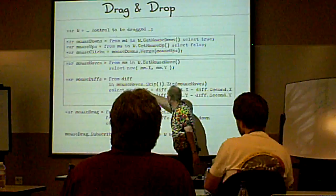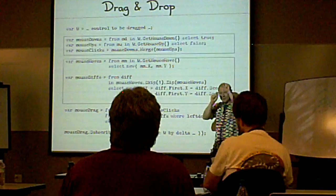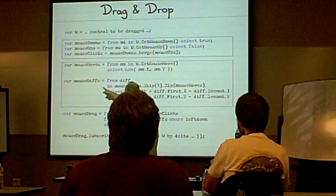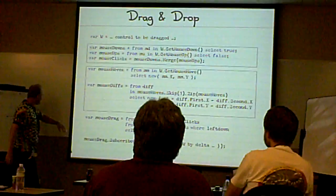Easy. So, that's what I do. Give me all the mouse moves, drop the first one, zip it with mouse moves itself. Now I get each pair of subsequent moves, and I just take the difference. So, this guy, mouse divs, is now a stream of x and y deltas.